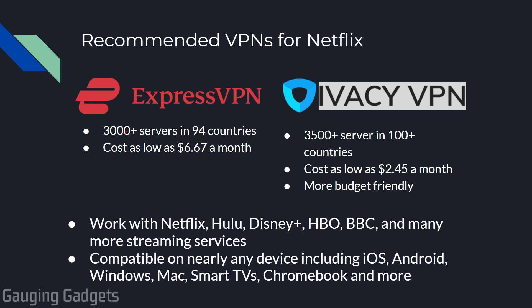This helps prevent Netflix from catching on to what's going on and preventing the service from working. ExpressVPN has over 3,000 servers in 94 countries, and Ivacy VPN has over 3,500 servers in 100+ countries. With both of these VPNs, you'll not only be able to stream Netflix in different countries, you'll also be able to use just about any other streaming service including Hulu, Disney+, HBO, BBC, and many more.